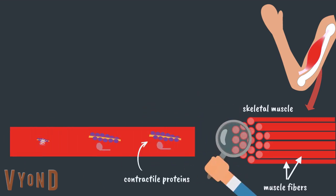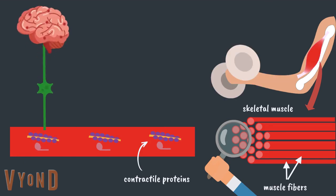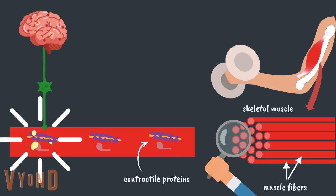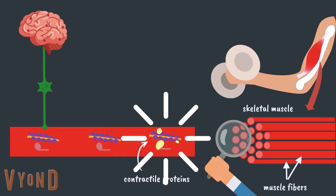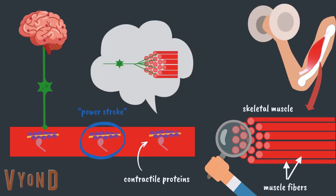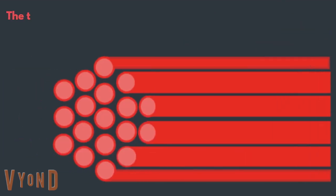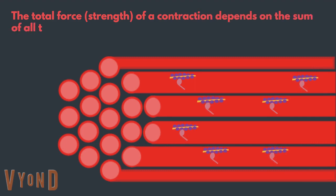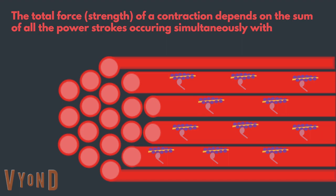Within each muscle fiber exists contractile proteins responsible for muscle contraction. When your muscles contract, your brain sends a signal to your motor neuron. It discharges the signal to the muscle fibers, causing the contractile proteins to interact and form a power stroke, which causes the muscle fiber to contract. All the muscle fibers within a single motor unit contract together. The total force or strength of a contraction in a skeletal muscle depends on the sum of all the power strokes occurring simultaneously within all the cells of a muscle.